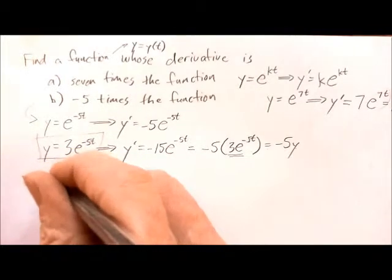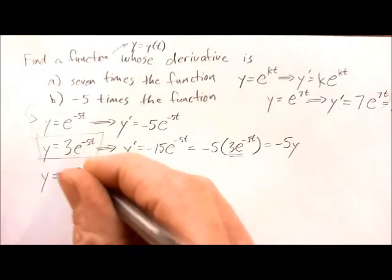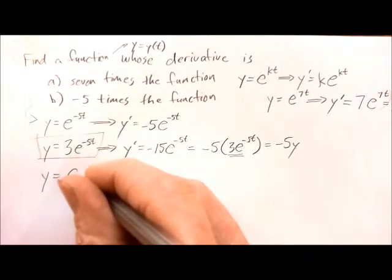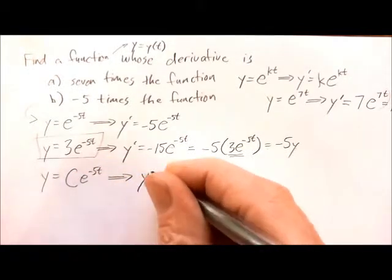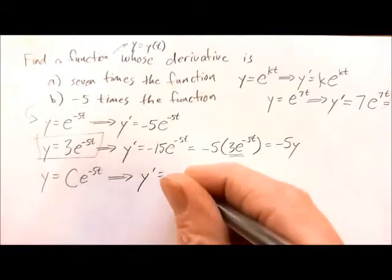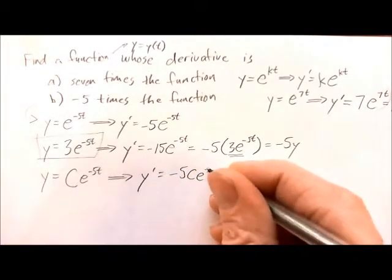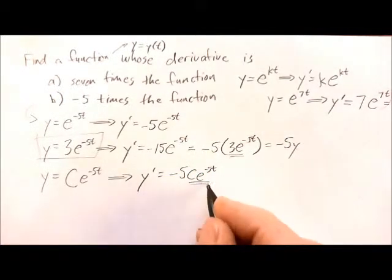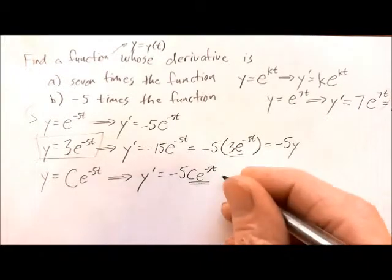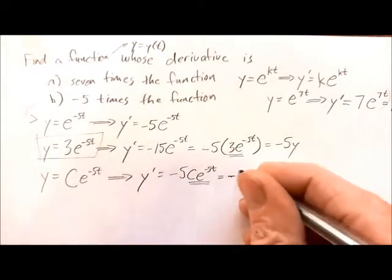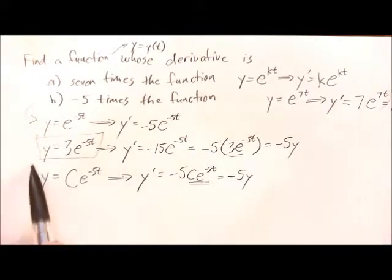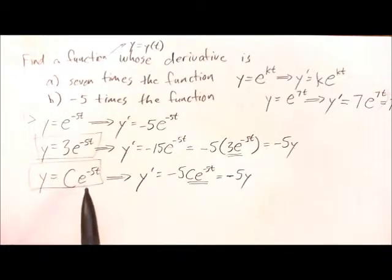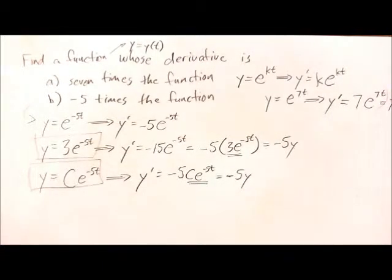In general, if c stands for any constant and we have y equals c e to the minus 5t, the derivative is going to be y prime equals negative 5 c e to the minus 5t. Since c e to the minus 5t is y itself, that's negative 5y. So for any arbitrary constant, y equals c e to the minus 5t has a derivative that's negative 5 times the original function.